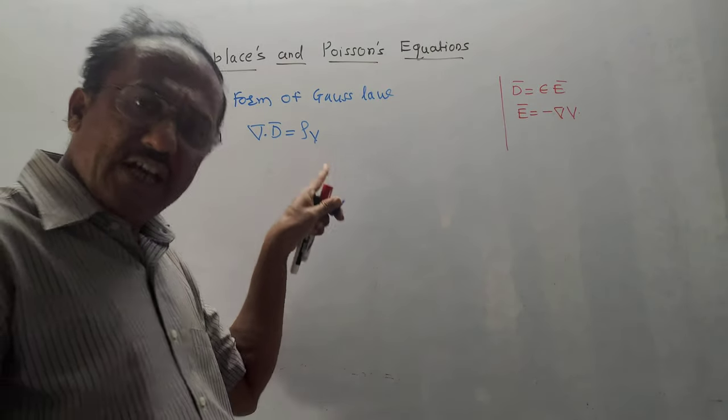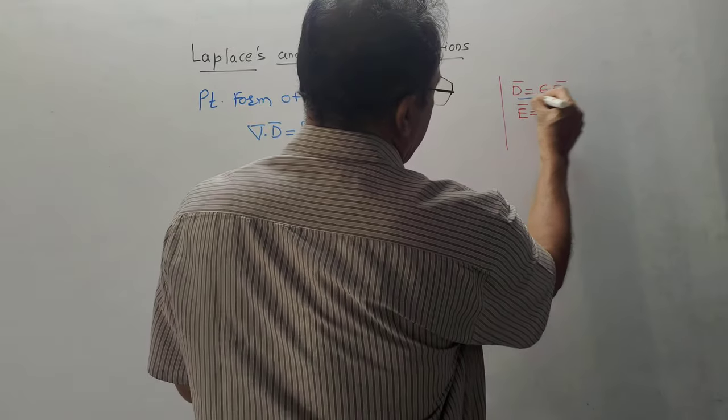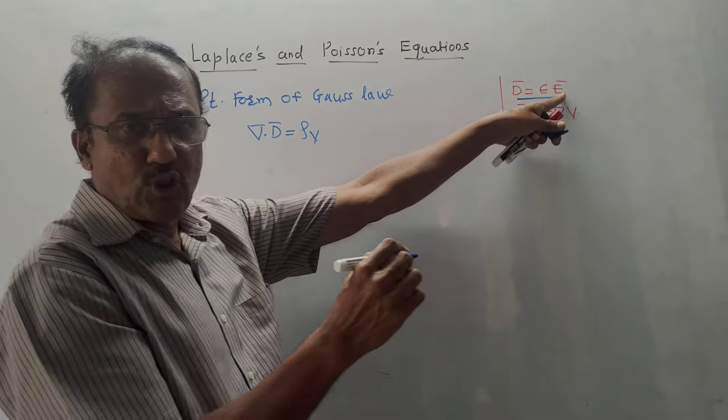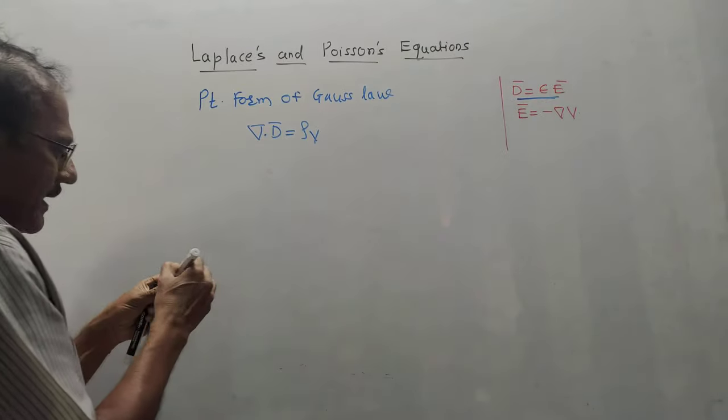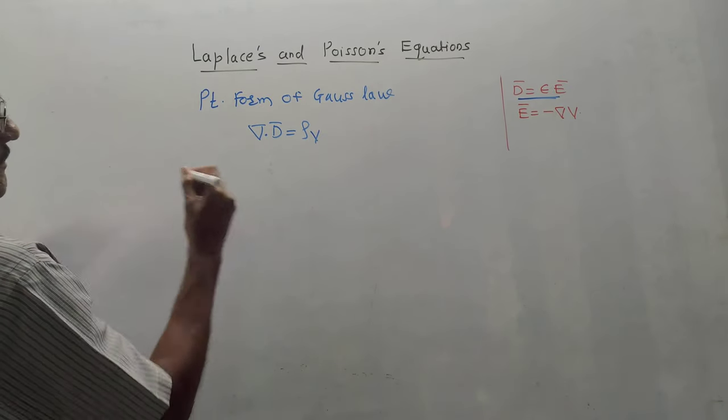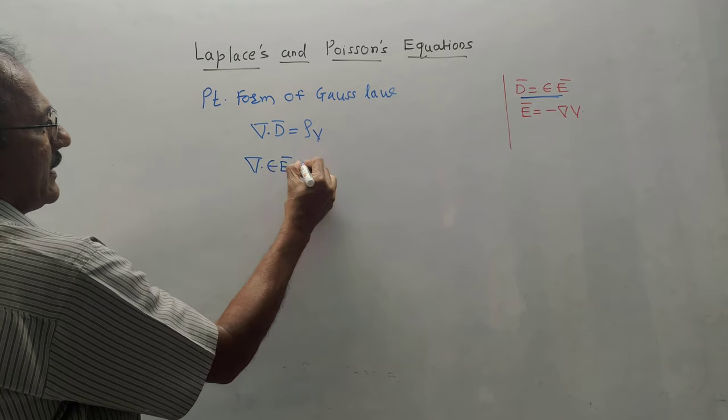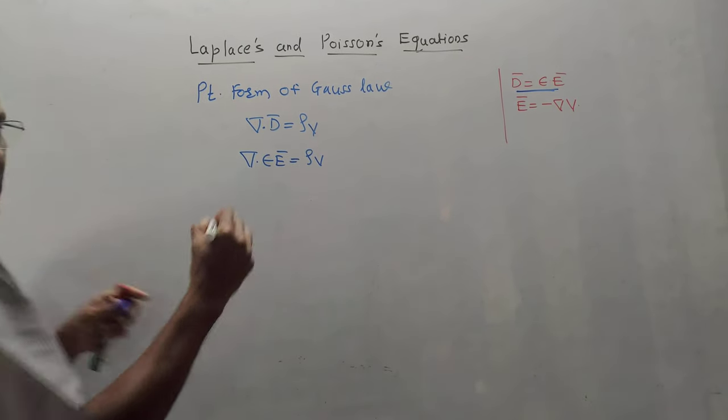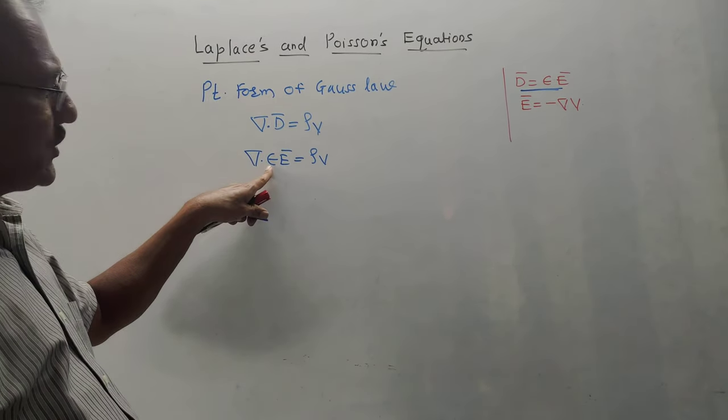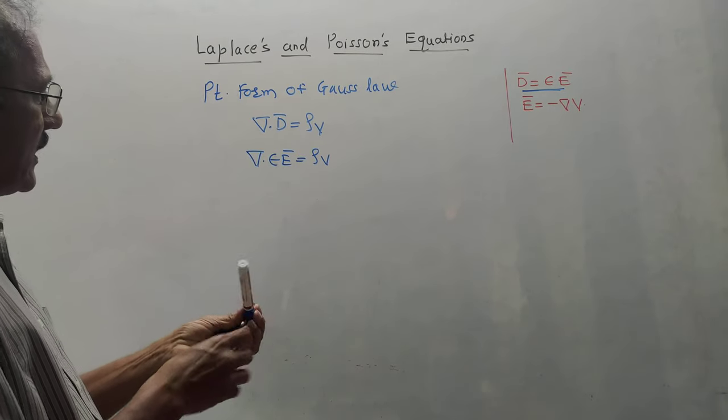Now we use the identity D̄ = εĒ. Substituting εĒ in place of D̄, the equation becomes ∇·(εĒ) = ρV. Since ε is constant, we can transfer it to the RHS.